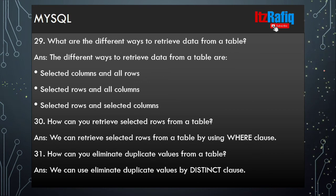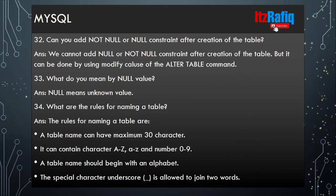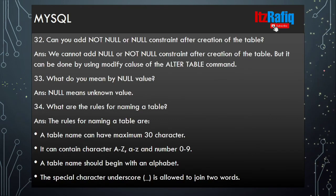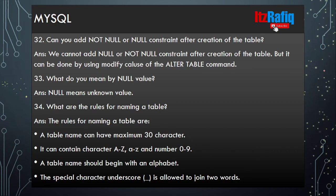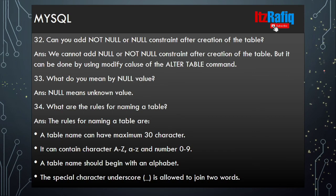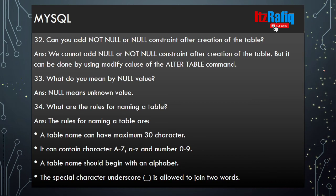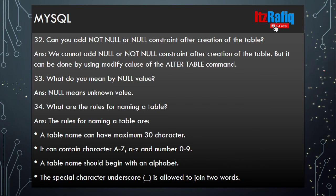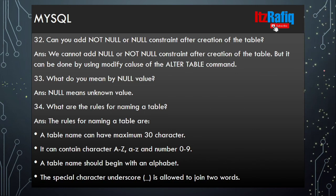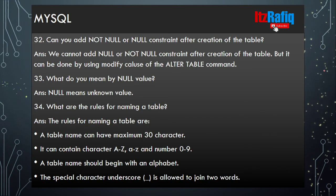Can you add NOT NULL or NULL constraint after creation of the table? Directly we cannot add NULL or NOT NULL constraint after creation of the table, but by using the MODIFY command we can do this. What do we mean by null value? Null value means unknown value — when we don't know a value, we write NULL, which means it is an unknown value.